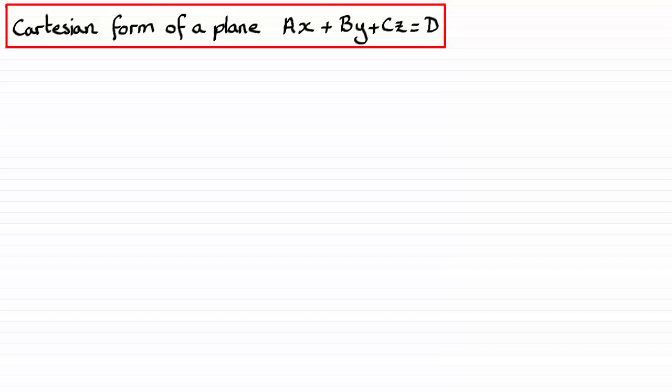Hi, now suppose we took the Cartesian form of a plane which you should be familiar with, and that is ax plus by plus cz equals d where a, b, c and d are constants.